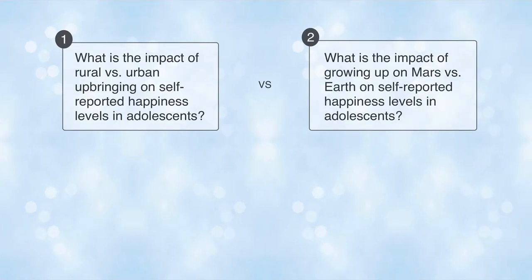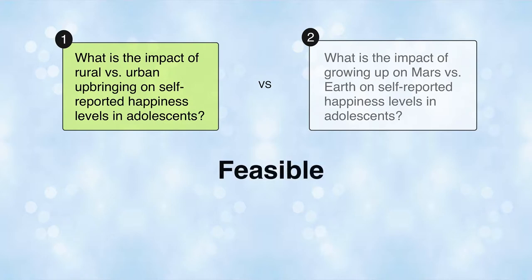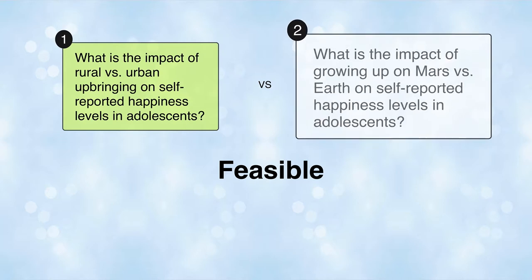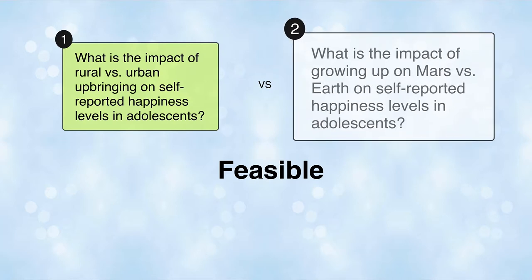Now let's compare another set of questions. How are they different? Which question sounds more manageable? Question 1 is more feasible. Currently, it's not technologically possible to raise children on Mars, so the second question can't be researched.